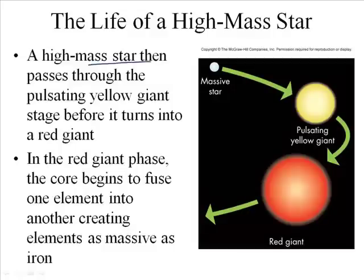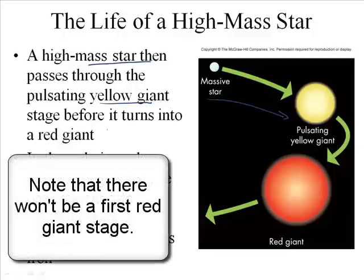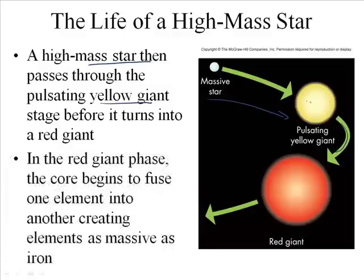So now here's where things get weird and different. The high mass star then passes through the pulsating yellow stage, skips that red stage, before it turns into a red giant. So it does a little different pattern. And so as it does this different pattern, these still have a lot more mass. And it's going to happen more rapidly, because if you have more stuff, it's going to be at a higher temperature.